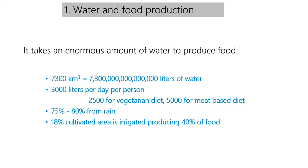There is a big difference in what people eat. A vegetarian diet takes an estimated 2,500 litres per person per day, while a purely meat-based diet takes about double that — 5,000 litres per person per day. Most of this water comes from rainfall directly on the land where the food crops are produced. Some 18% of the global cultivated area is irrigated, but that produces 40% of global food production.